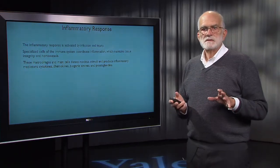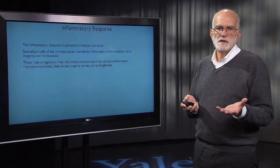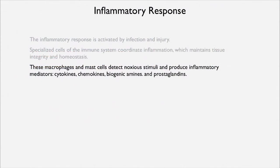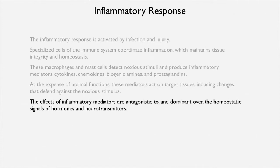Macrophages and mast cells detect noxious stimuli and produce cytokines, chemokines, biogenic amines, and prostaglandins. These cause a local vascular response but also a recruitment response — a signal that help is needed and cells migrate. At the expense of normal functions, these mediators act on target tissues and induce defensive change. The effects of inflammatory mediators are antagonistic to, and dominate, the homeostatic signals of hormones and neurotransmitters — it's kind of an emergency override that really disrupts normal homeostatic function.